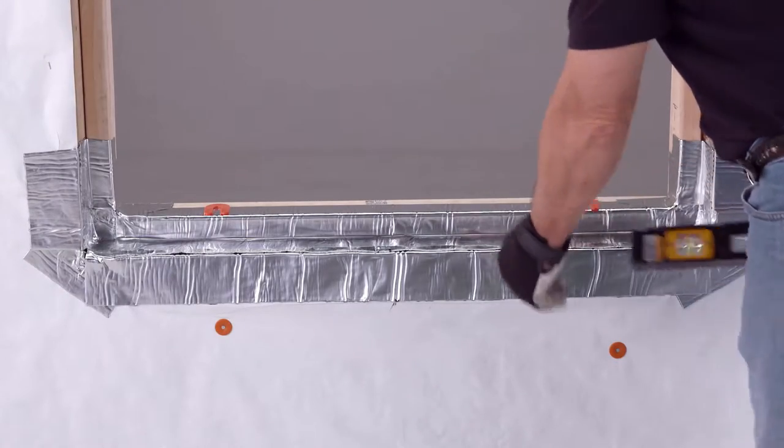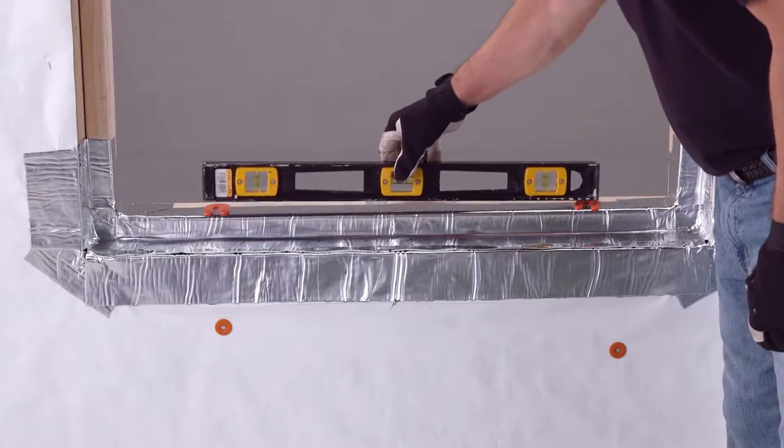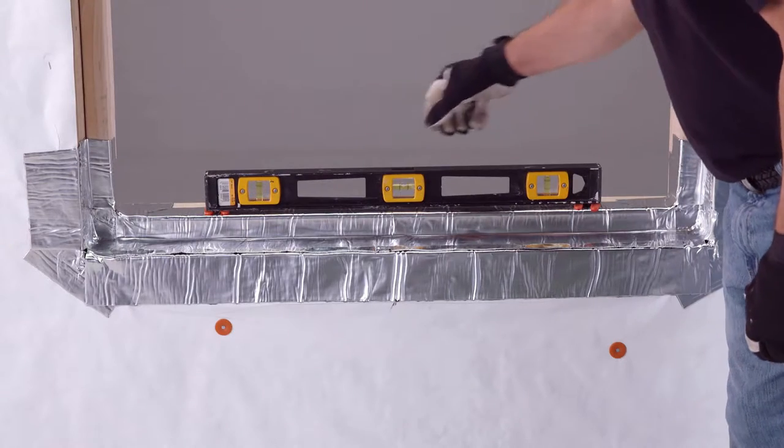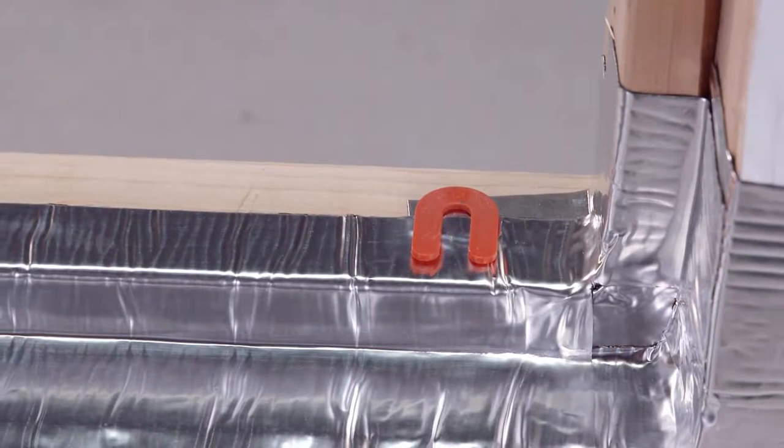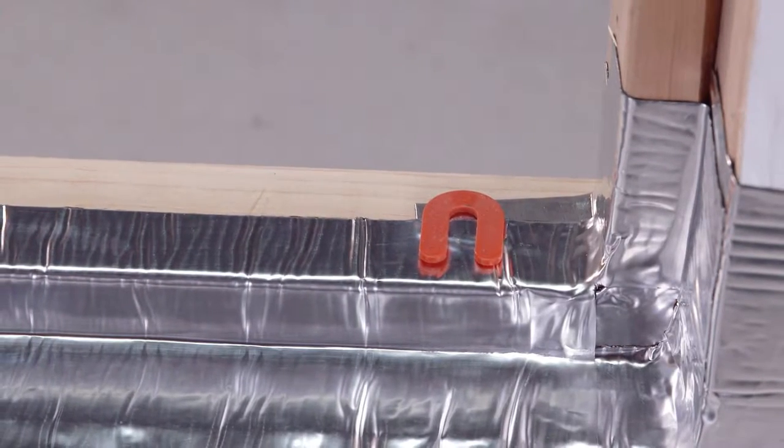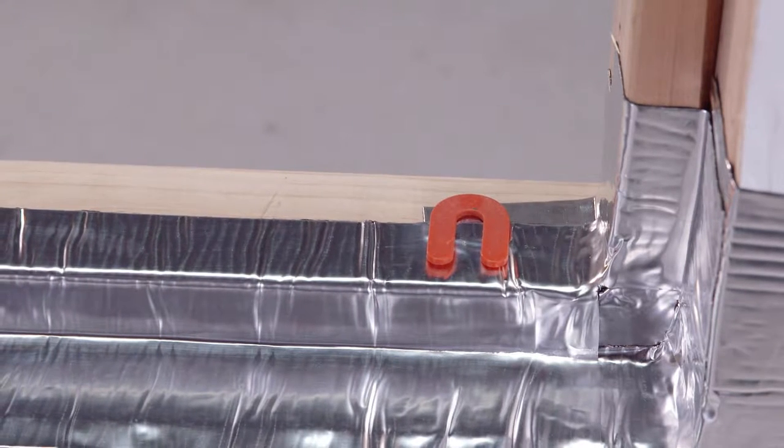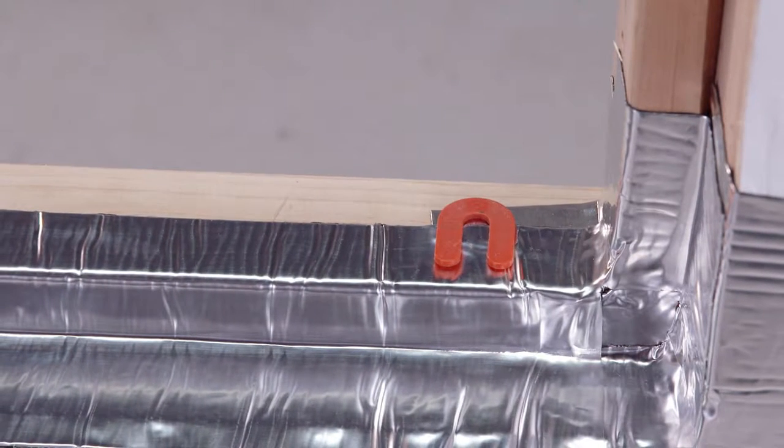Next, set your shims on the sill and then set a level on top bridging the shims. The OSI brand recommends the use of non-water-degradable composite, plastic, or PVC shims instead of wedge-shaped wood shims.